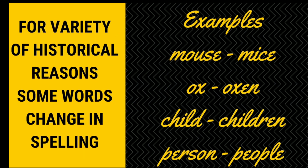Some nouns change their spelling for historical reasons. For example: child becomes children, ox becomes oxen, person becomes people, die becomes dice, mouse becomes mice. Note: 'children' is already plural, so you should not add S to it — 'childrens' is totally wrong. Similarly, 'people' is already plural, so 'peoples' is wrong — do not add S.